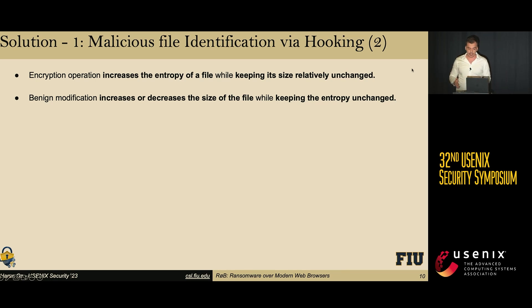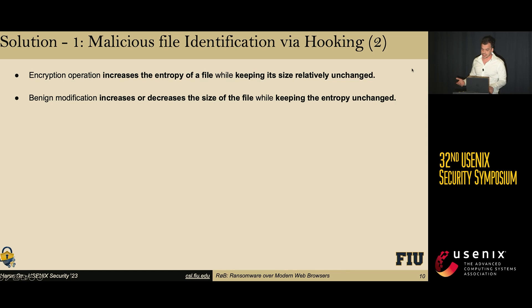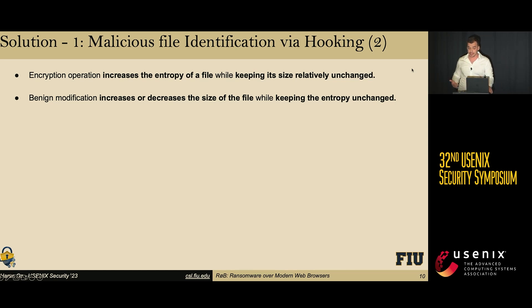These key indicators are the entropy and size differences of the modified files. The encryption operation often increases the entropy of the file while keeping the size relatively unchanged, whereas benign modification increases or decreases the size of the file while keeping its entropy unchanged.